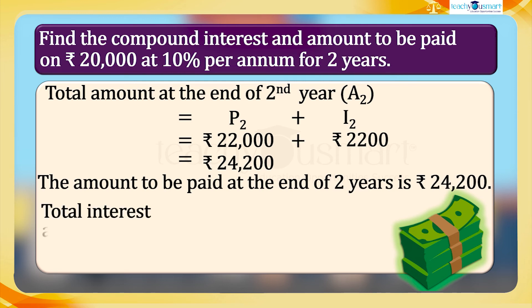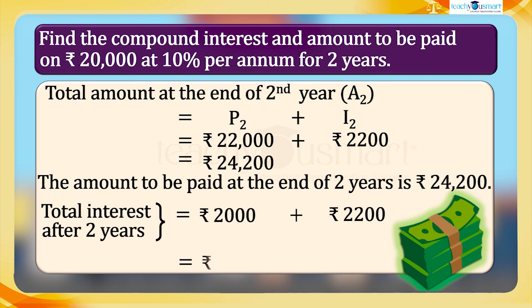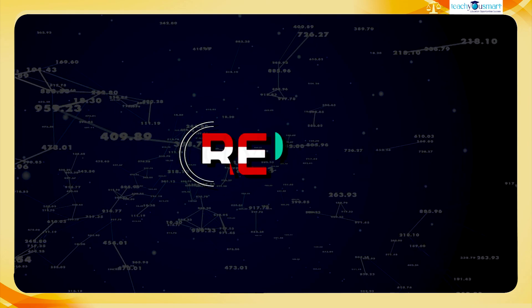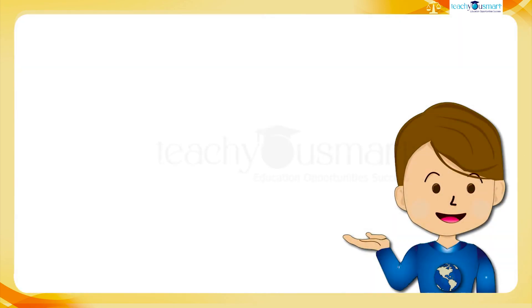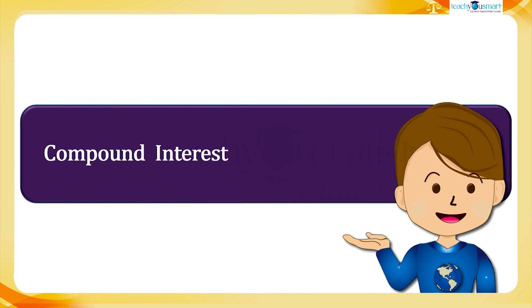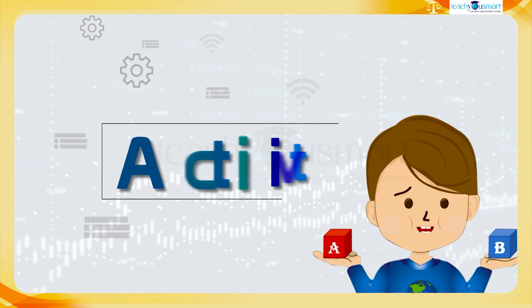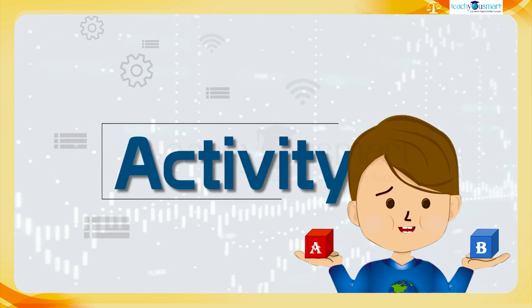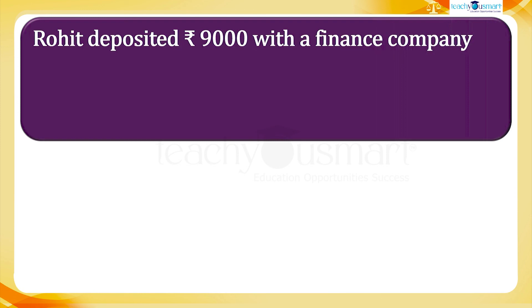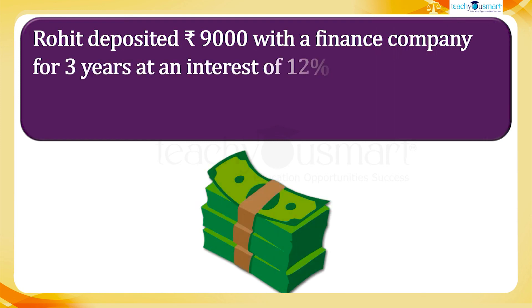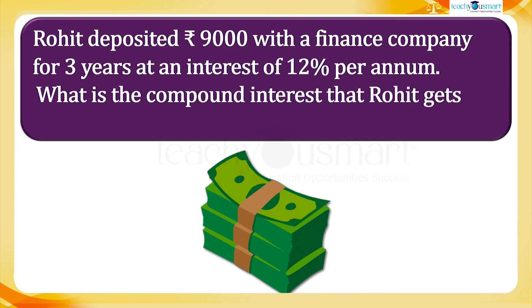The amount to be paid at the end of two years is 24,200 rupees, and the total compound interest after two years equals 2,000 + 2,200 = 4,200 rupees. Let's have a quick recap: today we discussed how to find compound interest. Before winding up, let's check how much you understood with an activity: Rohat deposited 9,000 rupees with a finance company for three years at an interest of 12 percent per annum. What is the compound interest that Rohat gets after three years?